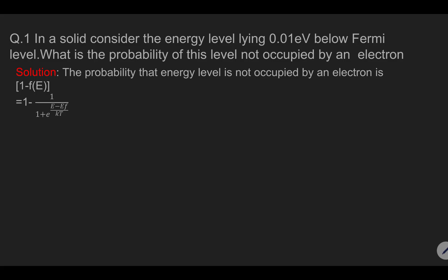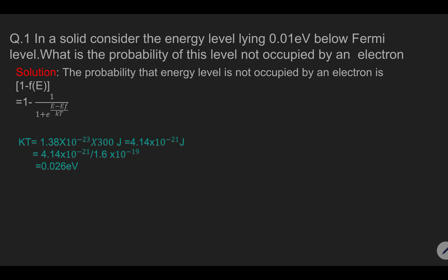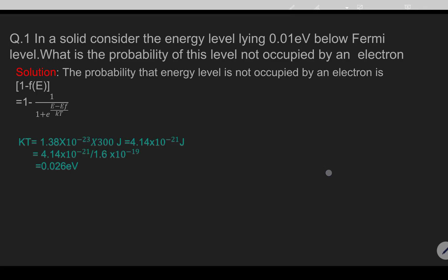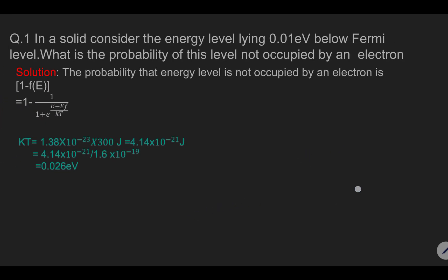Now we need to calculate these details. First, we calculate K into T, where K is the Boltzmann constant and T is the room temperature, which in Kelvin is 300. When we convert it into electron volt, we divide by 1.6 into 10 to the minus 19. Substituting into the formula, we get 1 upon 1 plus e raised to 0.01 divided by 0.026.